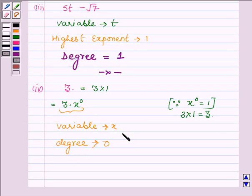Since the exponent of x is 0, the degree of this polynomial is 0.